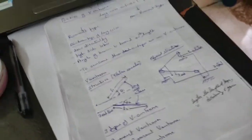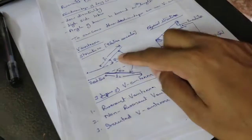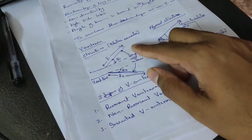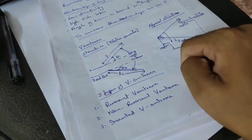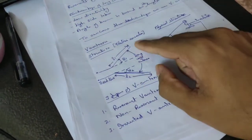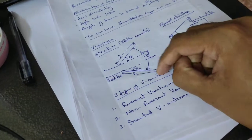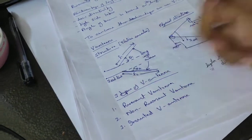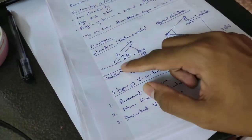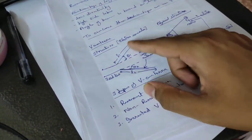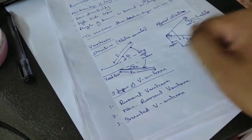Why the name V antenna? This is the structure of the V antenna — you can see it has the shape of a V. Hence the name V antenna. It is made in the shape of a V.